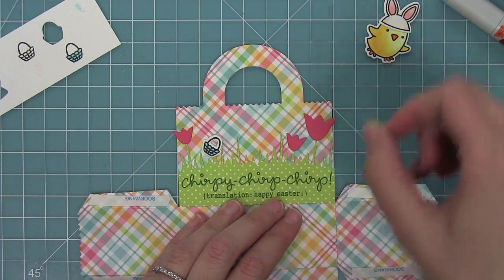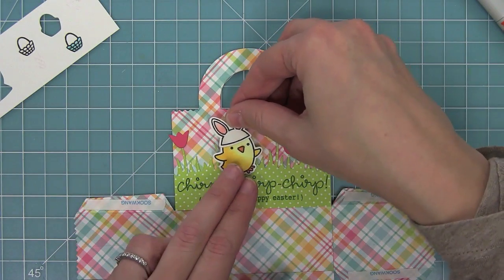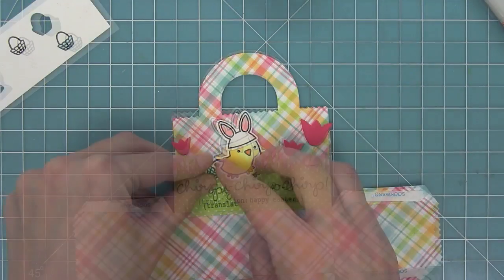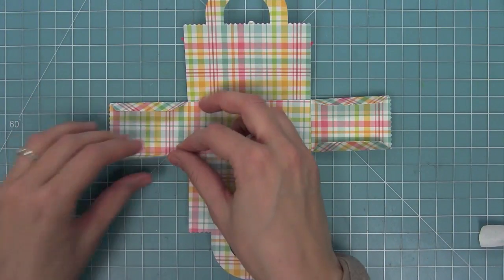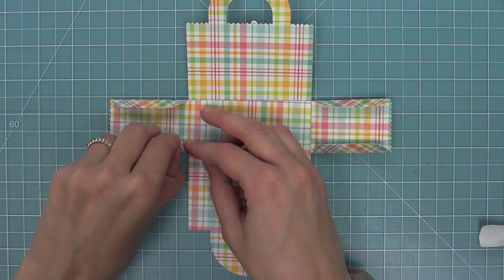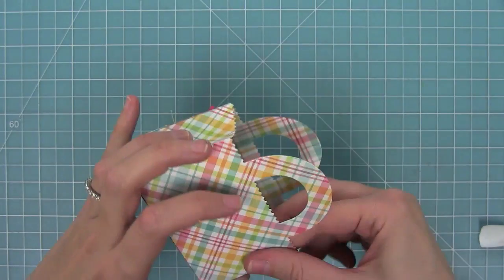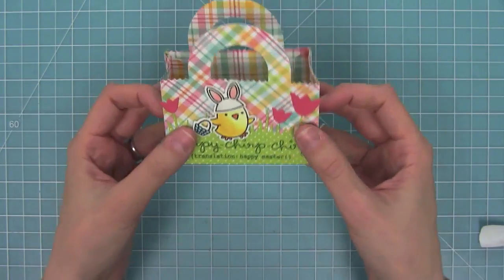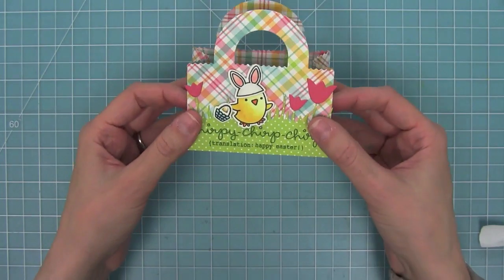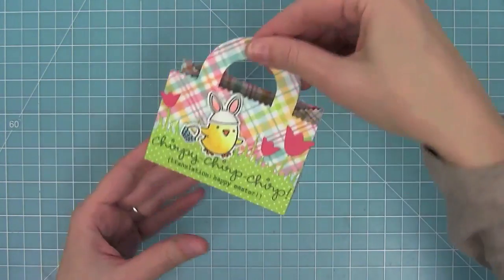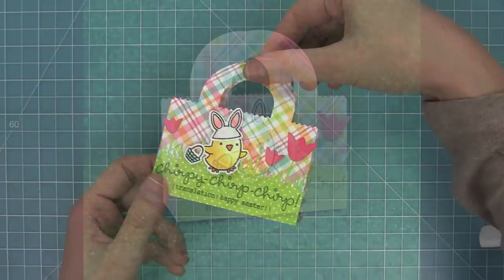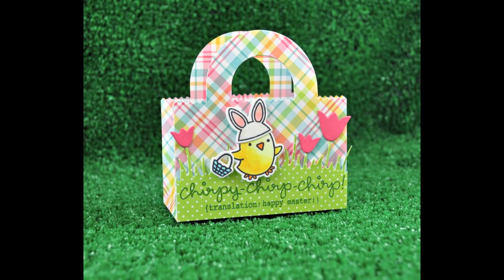Now here's my little Easter chick from Chirpy Chirp Chirp. I'm going to adhere him down with this cute little Easter basket, and now I can form the rest of the bag since everything is all decorated. I'm going to peel up those layers and just form that bag, press in those side edges, and now I have an adorable little Easter bag that's so cute. It would look so cute with Easter grass and little Easter candies inside. I just love how it turned out.